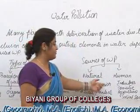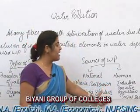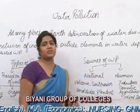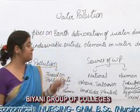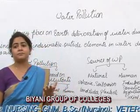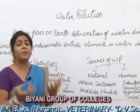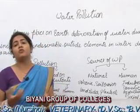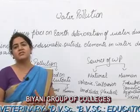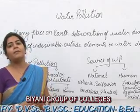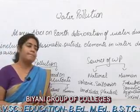Human sources include industrial waste, domestic waste, agricultural waste, and social sources. Industrial waste is the most significant example of water pollution, because mercury secreted from industries mixes with water and pollutes it.